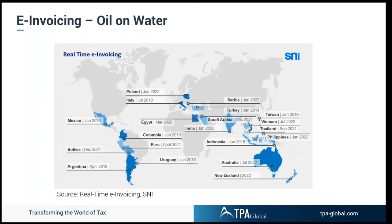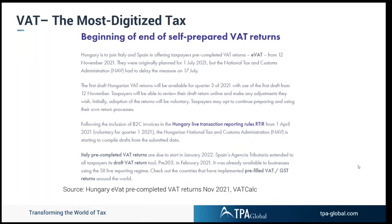Once invoices are with the tax authorities on, for example, a clearing system, the authorities have a lot of information and can start to pre-populate VAT returns and send you the electronic version. More and more, we are moving toward a full co-compliance model between taxpayers and tax authorities, where the only thing exchanged is data sets.